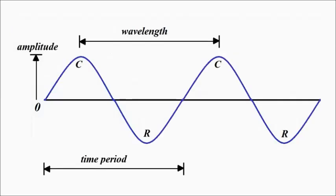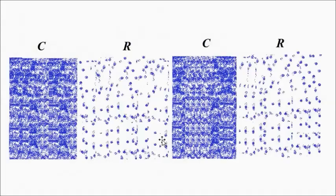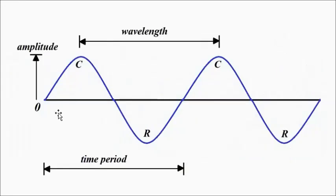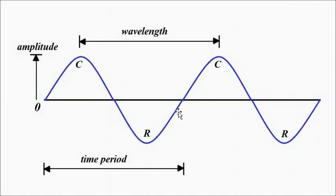Sound is basically a sound wave — it consists of a series of compressions and rarefactions. Like any other wave, a basic sound wave consists of a particular amplitude, a wavelength (the distance between two consecutive points on the wave), and a time period — the time taken for one complete cycle of the wave.